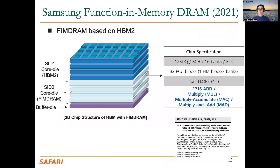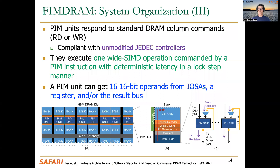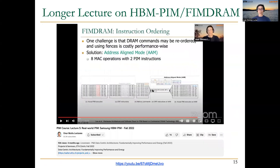We also talked about proposals from Samsung — for example, FIM DRAM or HBM PIM. This one is based on HBM memory, and some of the HBM layers have been modified to integrate small SIMD units called PCUs. These SIMD units have 16 lanes and operate on 16-bit floating point values. A link to the full lecture on HBM PIM is provided.